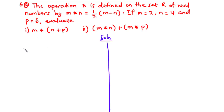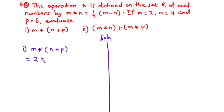Let's solve for part (i): m star (n plus p). We substitute the values — in place of m we have 2, star (bracket n is 4, plus p is 6). We need to solve the bracket first. So 4 plus 6 is 10, therefore this becomes 2 star 10.